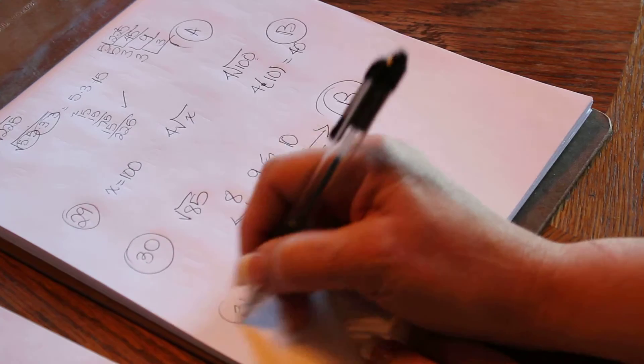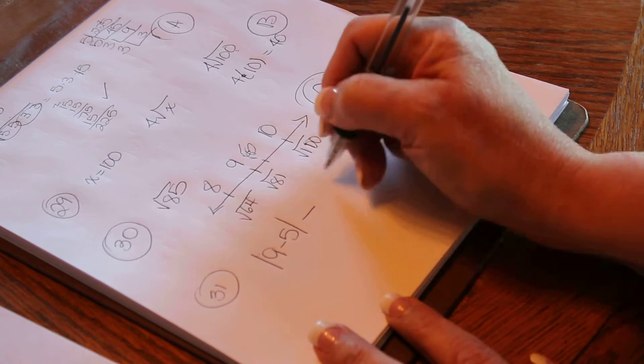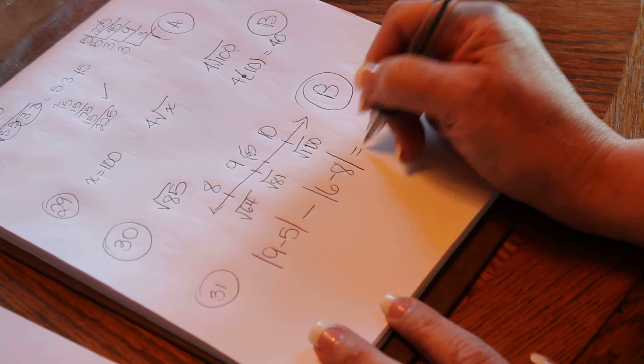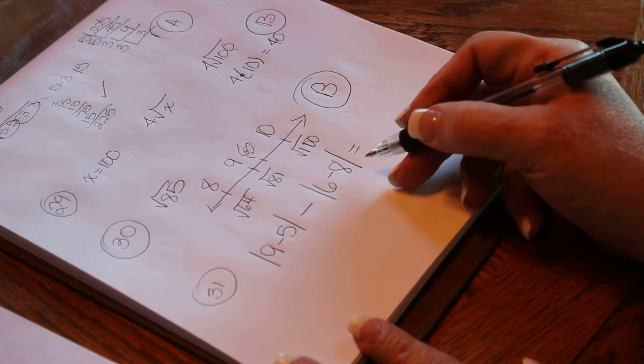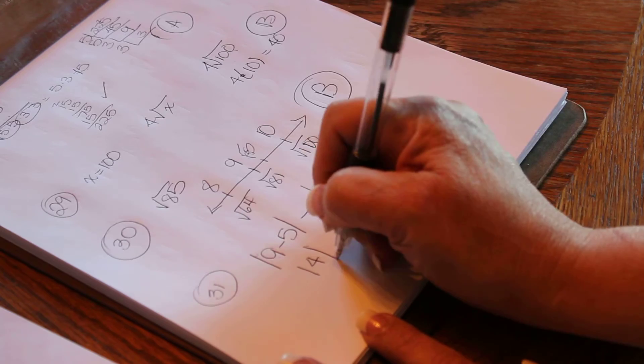Number 31 is absolute value of 9 minus 5 minus the absolute value or the distance from 0 of 6 minus 8. So 9 minus 5, the absolute value, 9 minus 5 is 4.